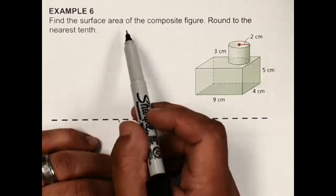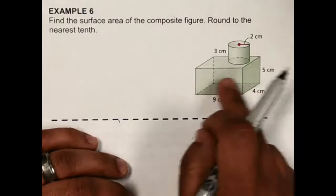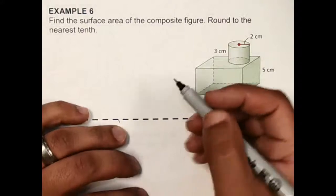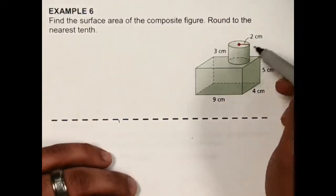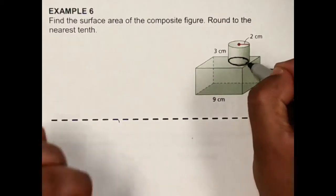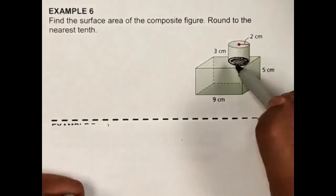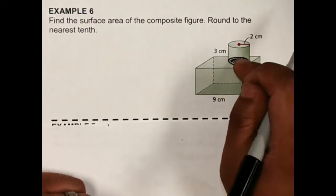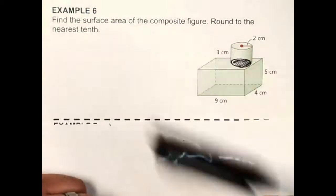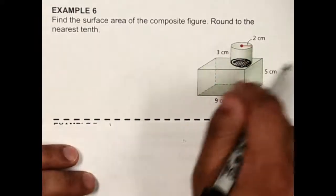This next example says find the surface area of the composite figure and round to the nearest tenth. I see there's a rectangular prism with a cylinder sitting on top of it. With this composite figure, the circle where the cylinder touches the rectangular prism is no longer an exposed surface, so we're going to have to subtract that from the total surface area — you can't see or touch that surface where they meet.